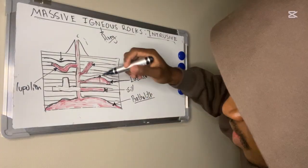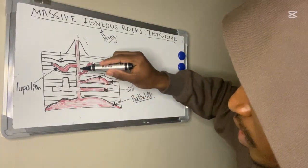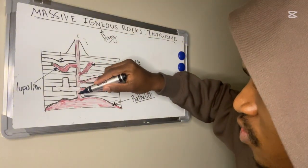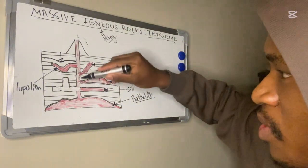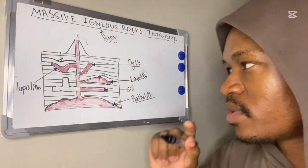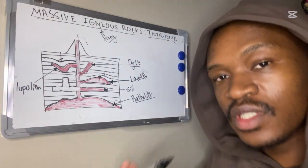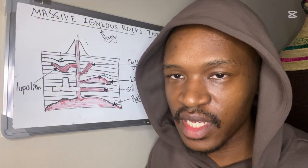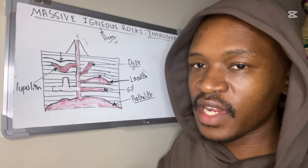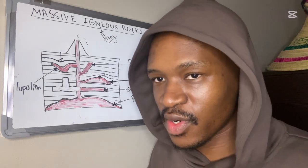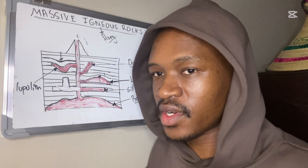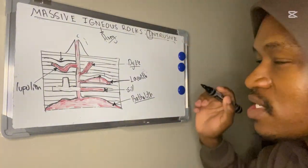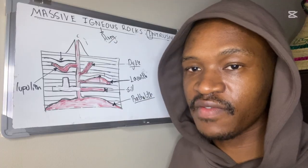This pathway which the magma takes to reach the surface is known as the pipe. Intrusive landforms can also be called plutonic rocks, but extrusive landforms can be called volcanic rocks. The word intrusive tells us that these landforms are below the surface.